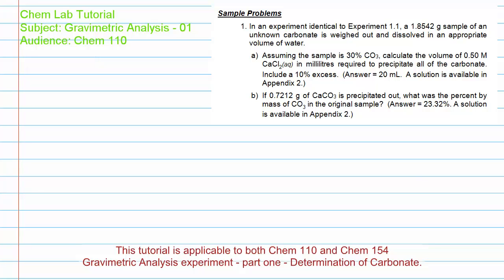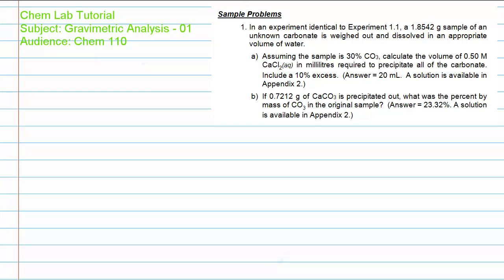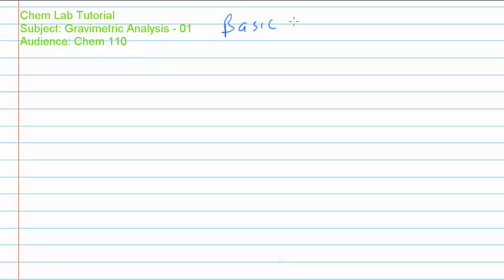Because if we understand the basics of the chemistry involved in this type of analysis, then I think we can have a better understanding of how we can perform calculations on the acquired data to determine a result. Now, if you're already okay with the basic chemistry involved in this lab and just want to get right down to reviewing the method of calculation, then just go ahead and watch the second tutorial on gravimetric analysis. Otherwise, I think it's a good idea to watch the rest of this first tutorial and get a basic understanding of the underlying chemistry.